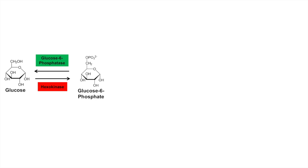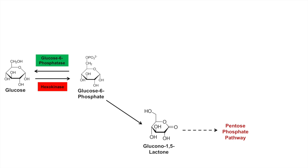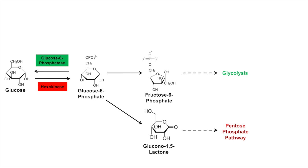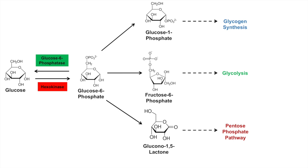Glucose 6-phosphate can also go into other pathways. It can be processed into glucono-1,5-lactone and shunted into the pentose phosphate pathway. Another pathway is that glucose 6-phosphate can be processed to fructose 6-phosphate and then used for glycolysis for energy production. However, the whole topic of this video is that if it's not used for any of these pathways, it can be processed into glucose 1-phosphate for glycogen synthesis.